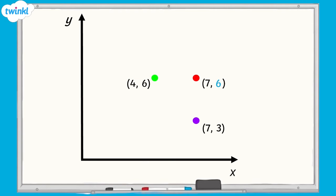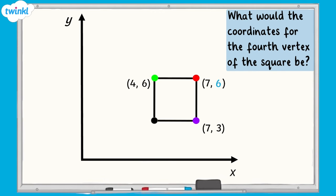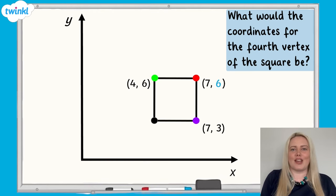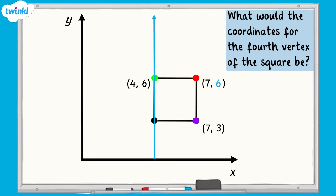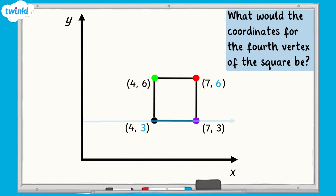If the three points that we've plotted make the three vertices of the square, can you work out what the coordinates of the fourth vertex would be? We can see that the black point is as far along the x-axis as the green point, which means it has an x-axis coordinate of 4. And the black point is as far up the y-axis as the purple point, which means it will share the same y-axis coordinate of 3. So the coordinates of the fourth vertex of the square are 4, 3.